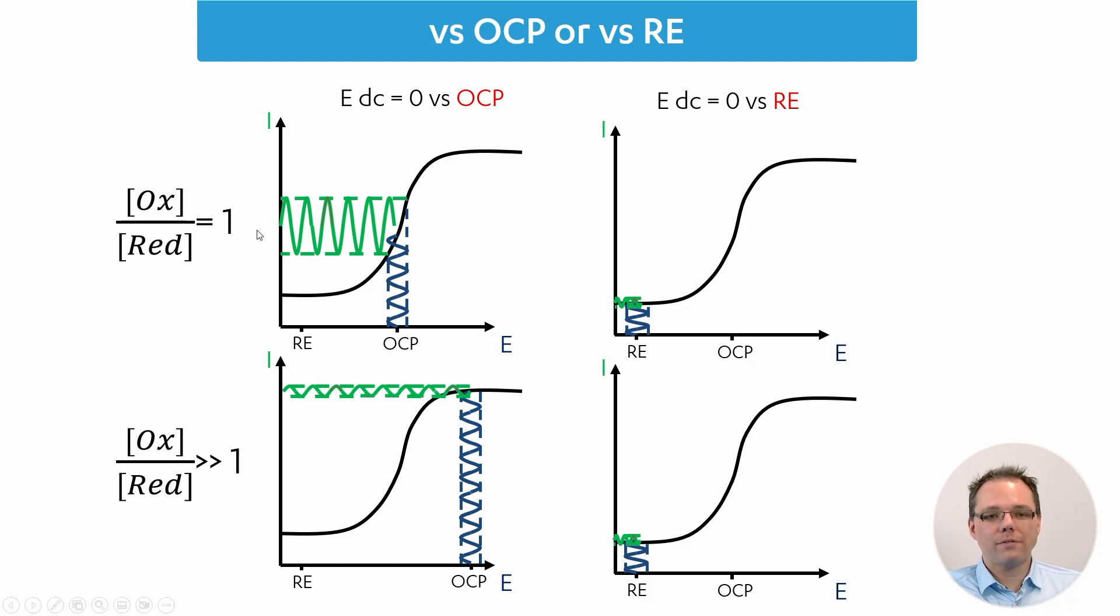We know that our systems do have a potential that is created chemically. Usually you want to perform your impedance measurement at a place where you get a very sensitive signal. If we look at the four graphs, each showing current plotted versus the potential according to the Nernst equation, these curves follow the Nernst equation if there would be no diffusion limitation.